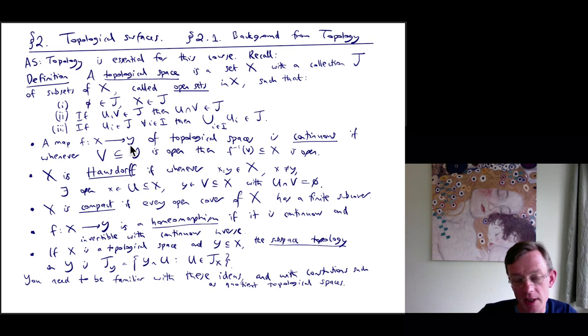Thirdly, if you have possibly infinitely many open sets in T, parameterized by some indexing set big I, then the union of those open sets is also open. So finite intersections of open sets are open, but arbitrary unions of open sets are open.